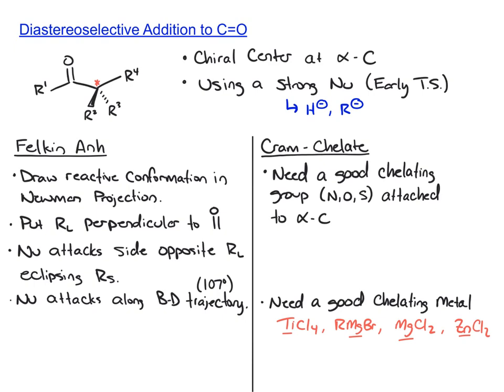With the Felkin-Anh model, this is our base model where what we'll do is draw a reactive conformation in a Newman projection. When we do this, we're viewing from the side of the carbonyl — specifically, the carbonyl carbon being the front carbon and the chiral center carbon being the back carbon of the Newman projection. It'll look kind of like this.